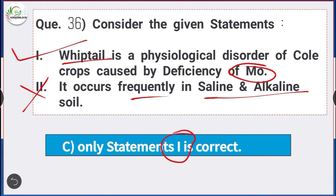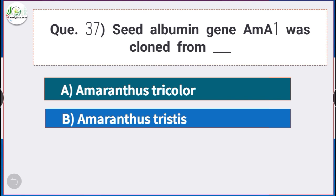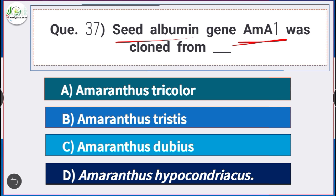Question number 37: Seed albumin gene AMA1 was cloned from — answer option D — Amaranthus hypochondriacus. Question number 38: Apple cultivars having triploid chromosomes — answer is option D — both Gravenstein and Jonagold are apple cultivars having triploid chromosomes.